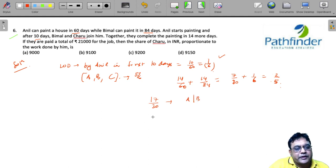So, obviously, the remaining work is 13 by 30. This would have been done by Charu. And because he has done 13 by 30th fraction of the work, he should be paid 13 by 30th fraction of the amount as well. So, that makes it 9100 rupees.